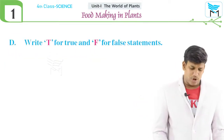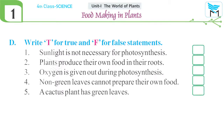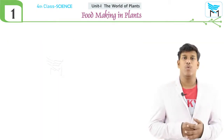Now let's do true or false. First: sunlight is not necessary for photosynthesis — this is false, because sunlight is necessary. Second: plants produce their own food in their roots — this is also false. Third: oxygen is given out during photosynthesis — this is true. Fourth: non-green leaves cannot prepare their own food — this is false, as non-green plants like croton can prepare their own food. Fifth: a cactus plant has green leaves — this is false, as cactus has no leaves.